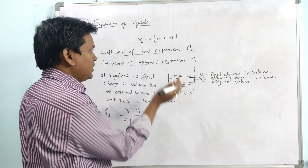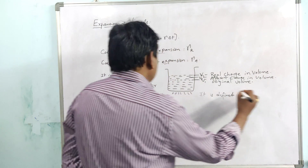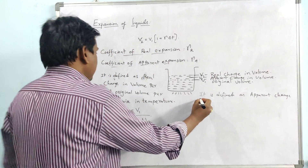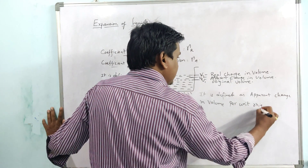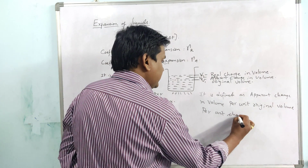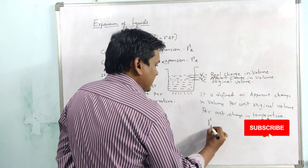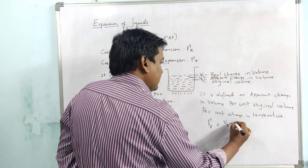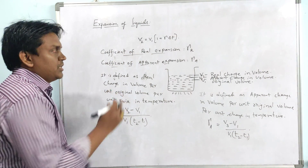Similarly, the coefficient of apparent expansion γa is defined as the apparent change in volume per unit original volume per unit change in temperature. That is: γa = (V3 − V1) / (V1 · (T2 − T1)). So this is the formula for the coefficient of apparent expansion.